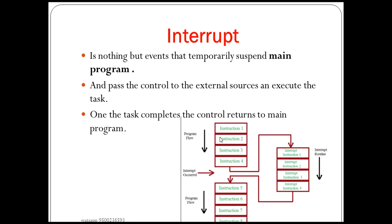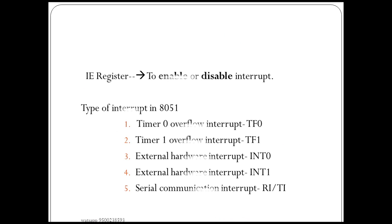Let's go to the diagram. The program starts from the bottom: Instruction 1, Instruction 2, Instruction 3. If an interrupt occurs, it breaks the main flow. You go to the interrupt service routine and then return to the main program. This is the interrupt process.